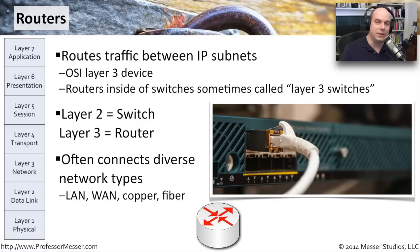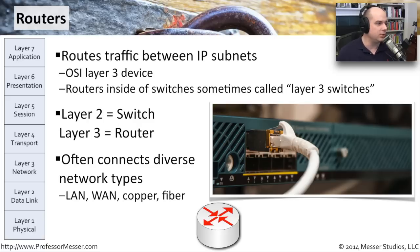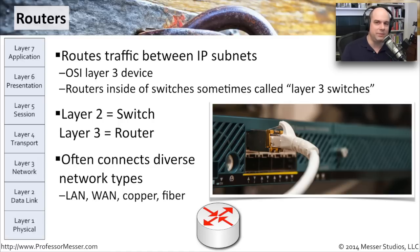Routers are also able to connect different network types — a wide area network connection, a fiber-based network connection, a copper-based network connection — they all go through the router. The router is smart enough to do whatever types of signaling translations or packet translations are needed between those different networks. So not only are we connecting different IP subnets together, we can connect very diverse networks together with routers. From a security perspective, there is also some basic filtering capability — you have the ability to filter out certain port numbers.